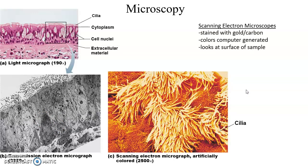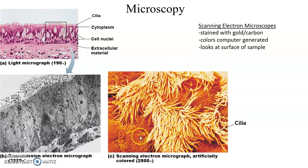The scanning electron microscope uses metal or carbon to stain the surface of the cells, so it looks at the surface of the structure. The transmission electron microscope goes into the cells, while the scanning electron microscope just looks at the surface. So here we're looking at the top of cells. Pretty cool.